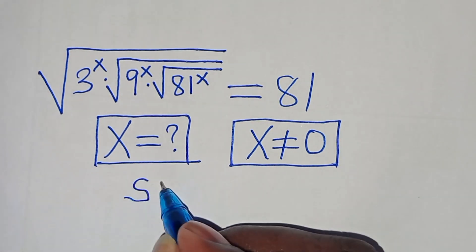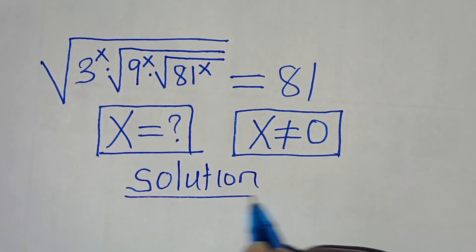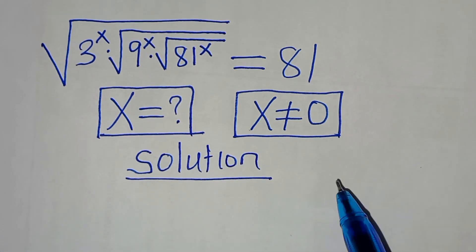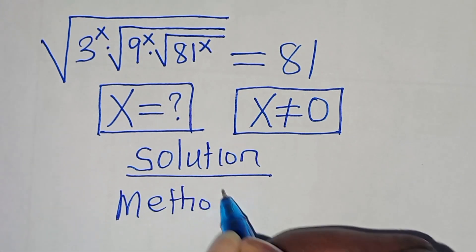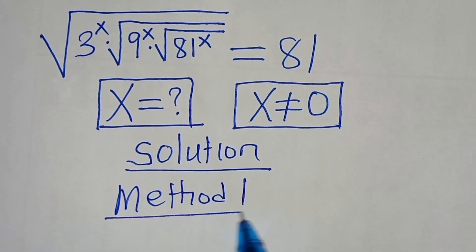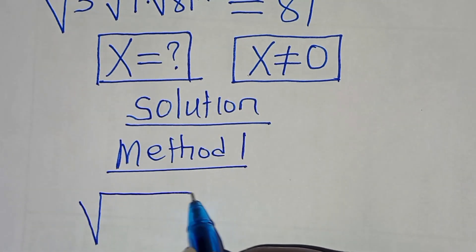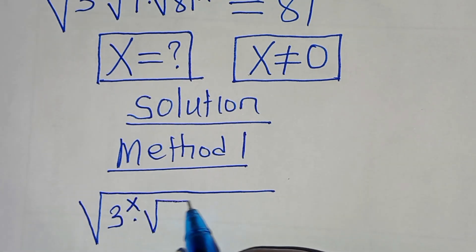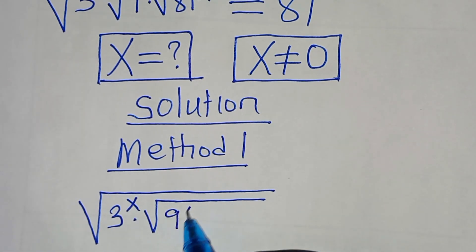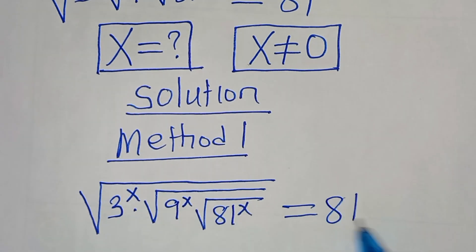Let's provide a solution. We can apply two methods to solve this. Let's start with Method 1. We have the square root of 3 to the power of x, multiplied by the square root of 9 to the power of x, multiplied by the square root of 81 to the power of x. This is equal to 81.